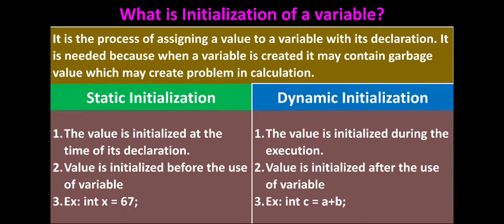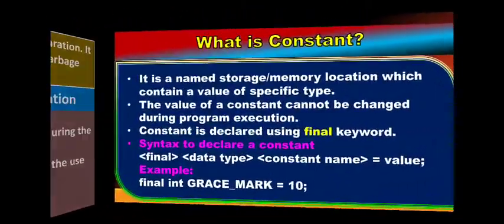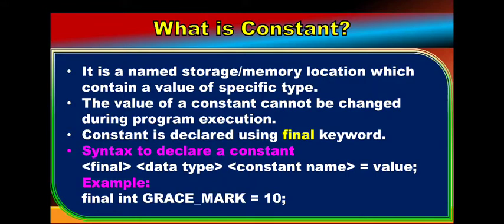Example of static initialization: int x = 67; — at the time of declaration the value is initialized, so during compile time the variable is created and the value is assigned before use. Example of dynamic initialization: int c = a + b; — when the program executes this statement, the addition of a and b is computed and assigned to variable c. So in dynamic initialization the value is assigned during execution rather than at compile time.